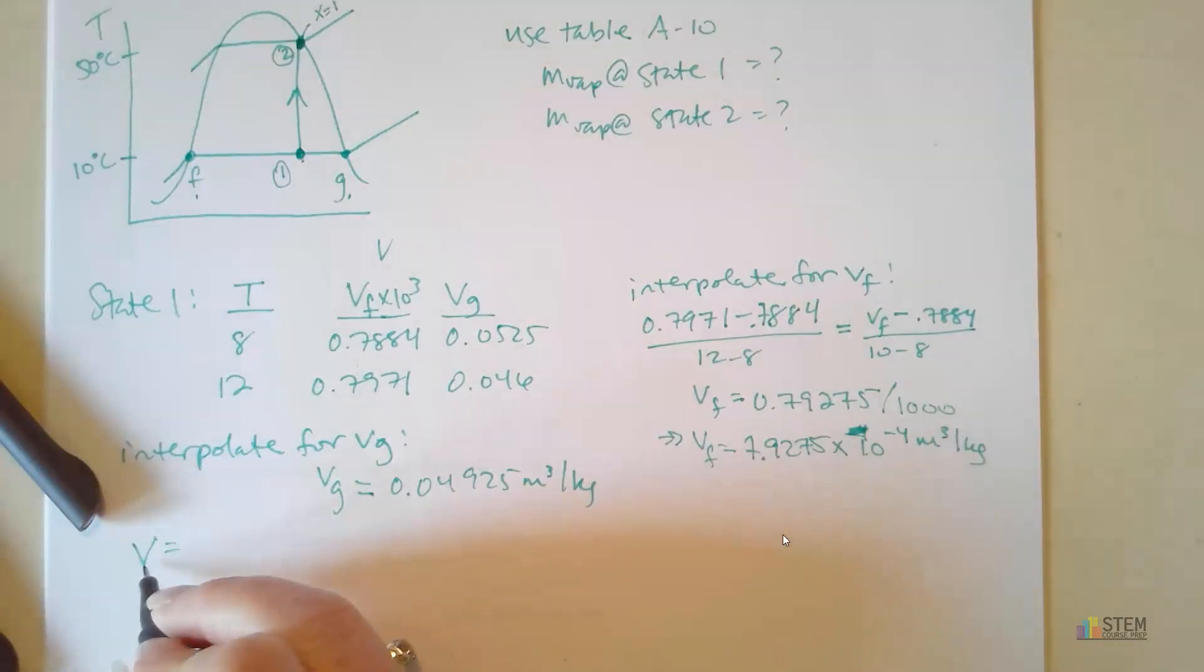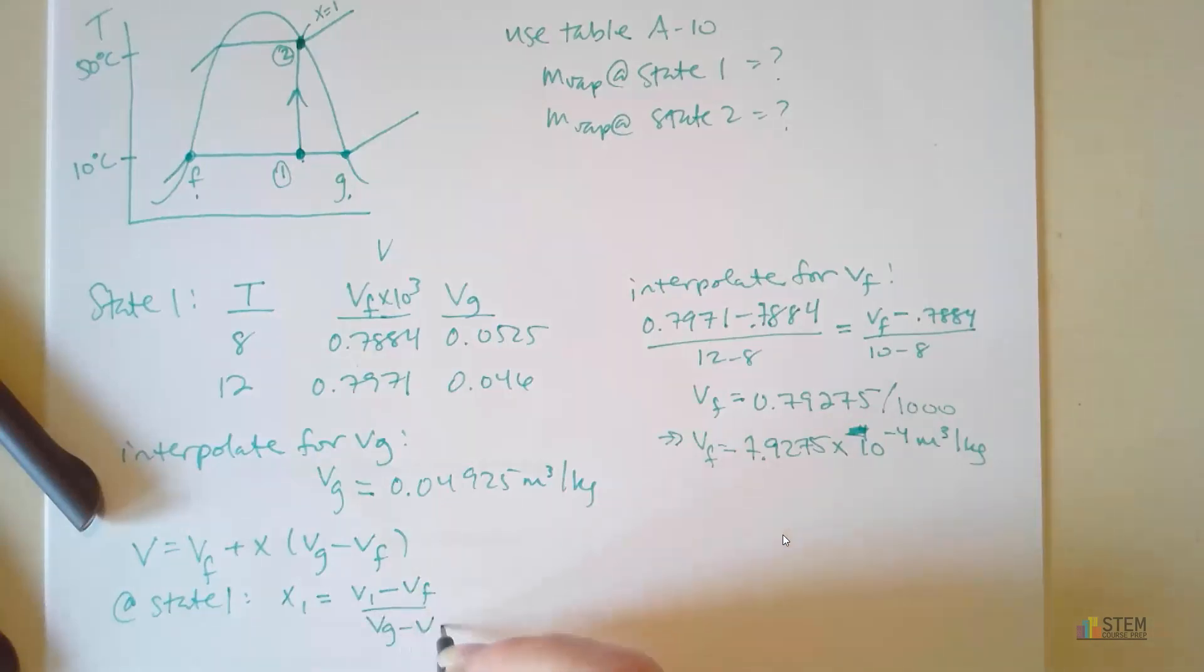If you remember, we've got this equation for specific volume, where specific volume is equal to VF plus X times VG minus VF. We're trying to find quality, because once we get quality, we can figure out how much vapor mass we've got. Now at state 1, if you solve this equation for quality, we'll have X1 equals V1 minus VF over VG minus VF. We'll call it equation 1. And then at state 2, if you do the same thing, we'll have X2 equals V2 minus VF over VG minus VF.